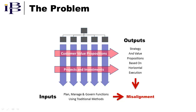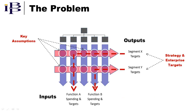What often results are unclear accountabilities and decision rights for delivering planned business results. From a planning perspective, the challenge lies in translating enterprise targets into those for specific customer segments, business processes, and functions — and to make this process transparent by exposing key assumptions that connect these plans from both financial and operational perspectives.